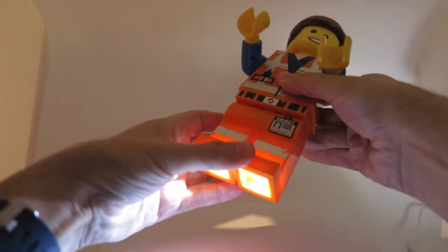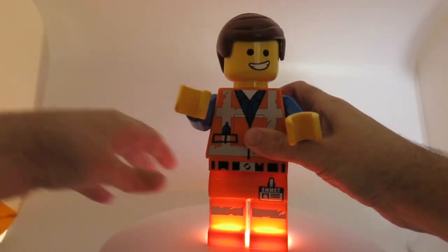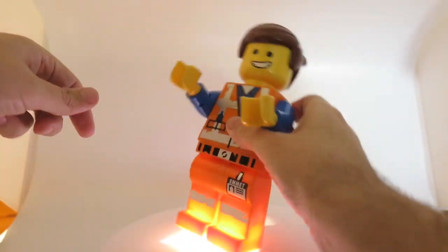So basically you can light your way around using Emmet, or you can have him sort of doing a hot foot shuffle. It looks like he's dancing on hot coals.